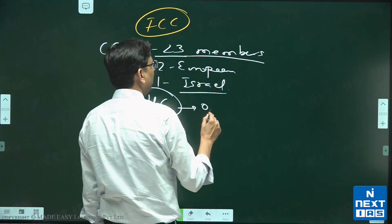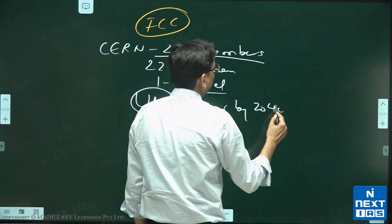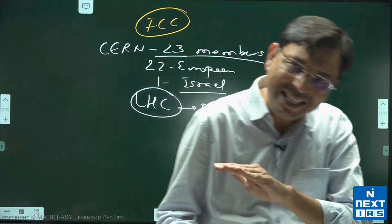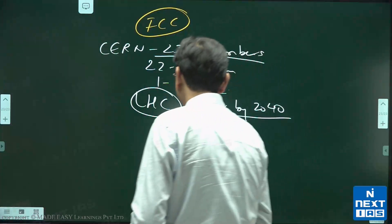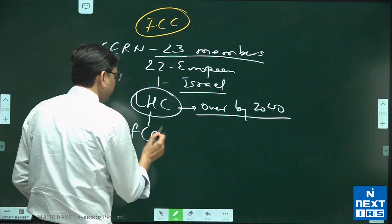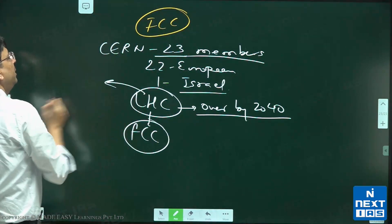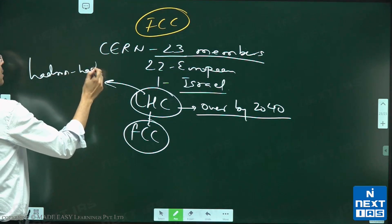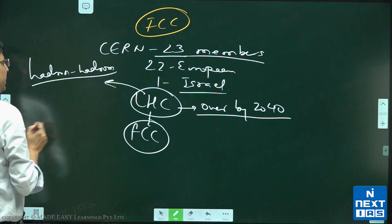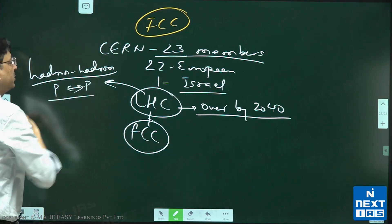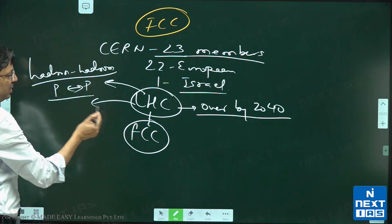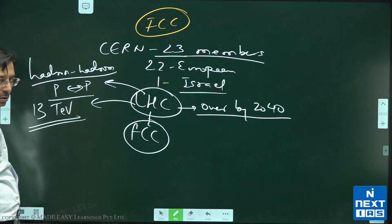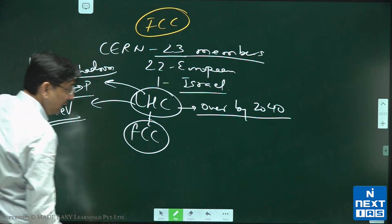This LHC will be over by 2040, and later this LHC will be followed by Future Circular Collider. In LHC they carried out hadron-hadron collision, which means proton-proton collision. The combined energy of this proton-proton collision was 13 tera electron volts.